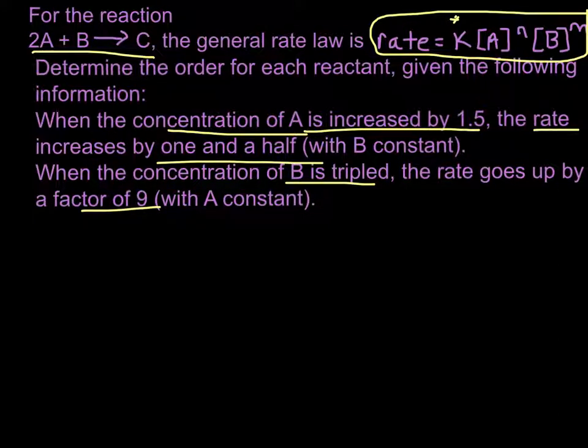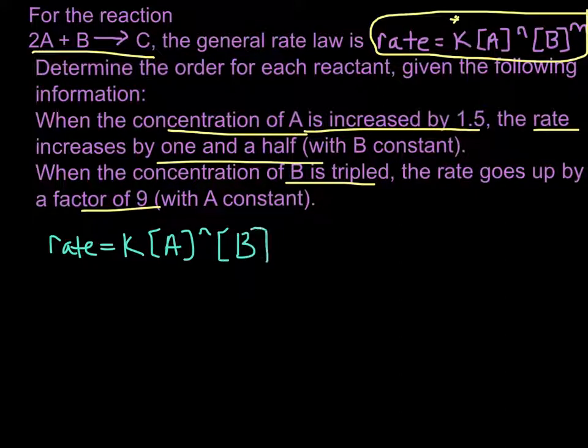So the first thing I'm going to do is write our generalized rate law here. So that's rate equals the rate constant, concentration of A to the n power, concentration of B to the m power. And let's remember what is going to stay constant here. One is the rate constant, so no matter what we do to those concentrations, K is going to remain the same. So we can essentially ignore it in this equation. We don't need to worry about it because it isn't going to change based on changing the concentrations of reactants.